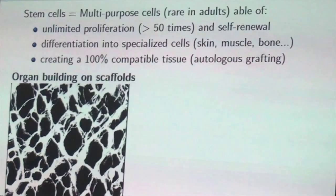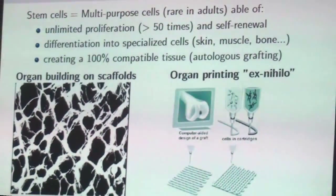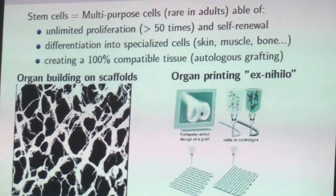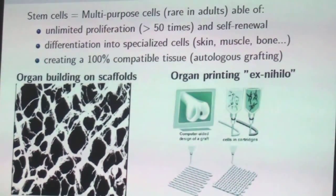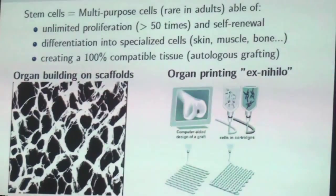Two techniques can be used to build organs. Either you use a scaffold made of collagen and protein on which the stem cells will grow, or you can print an organ layer by layer, like with a printer. You put the stem cells in the cartridge and scan the surfaces to get your layers done correctly with your design.